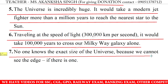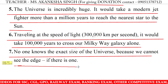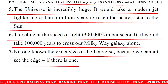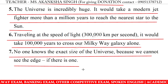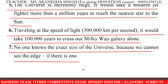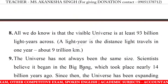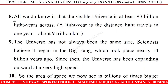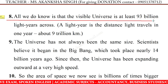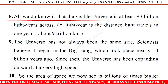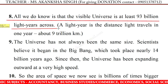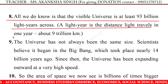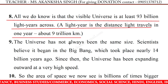Number 7: No one knows the exact size of the universe, because we cannot see the edge, if there is one. Number 8: All we do know is that the visible universe is at least 93 billion light-years across. A light-year is the distance light travels in one year, about 9 trillion kilometers.